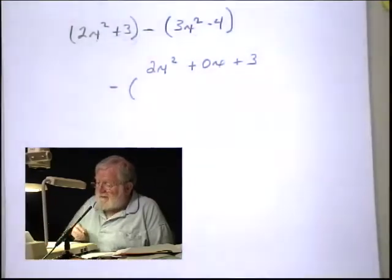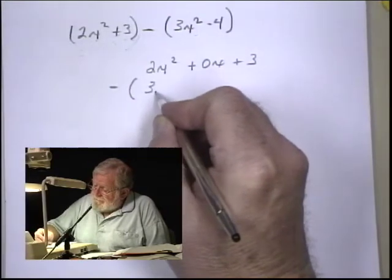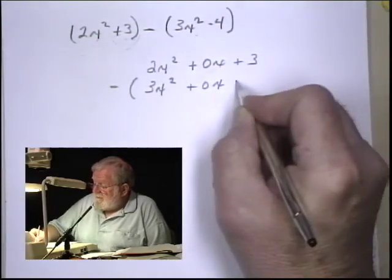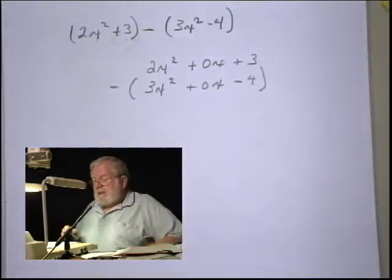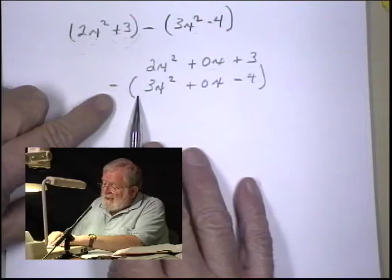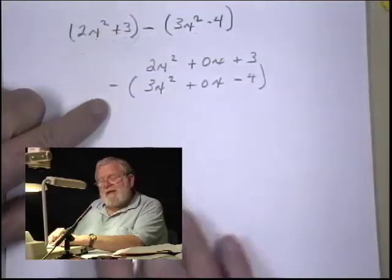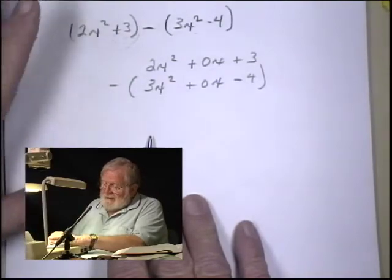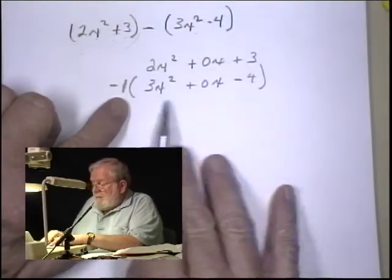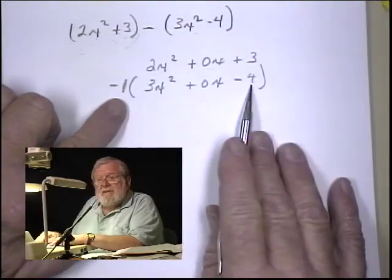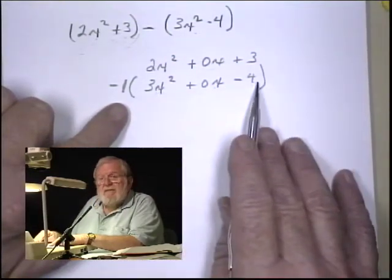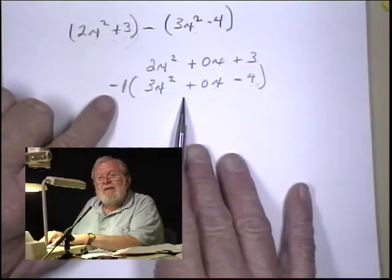I'm going to put a parentheses around here: (3x² + 0x - 4). I put the negative out here because I want to show that we're subtracting each of these. The best way to think of this is to think that there's a negative 1 out here, and we want to remove the parentheses. To remove the parentheses, we multiply each of these terms by this negative 1, and once we do that, we can take away the parentheses.